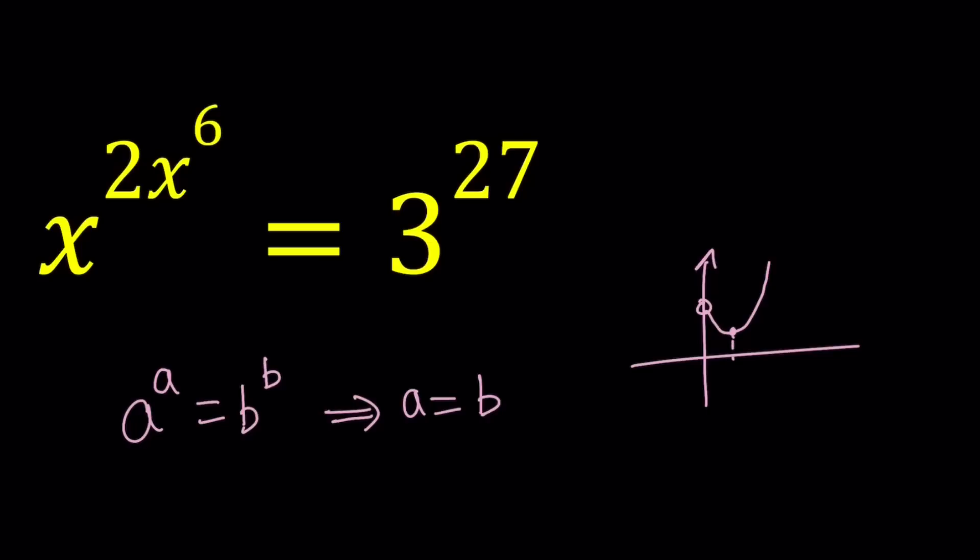So, when you have a y value that is equal to 1, for example, y equals 1 is going to intersect at one point. So, x to the x equals 1 has one solution.